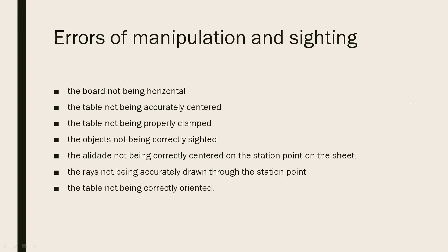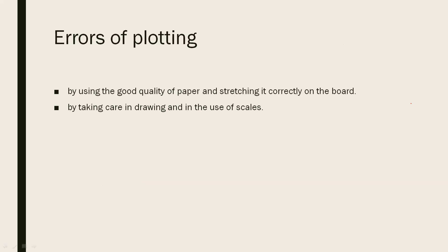The next category is errors of manipulation and sighting. The table should be properly centered and the objects clamped correctly. The alidade should be set correctly. We should mark the correct point on the sheet. The back-ray should be drawn correctly. The table should be leveled correctly. These are manipulation and sighting errors. Regarding plotting errors: the paper should be of good quality, the board surface should be correct, and after drawing, a proper scale should be used.